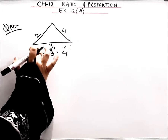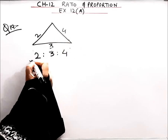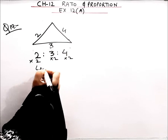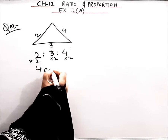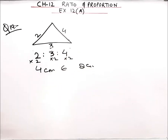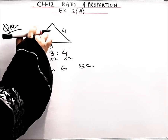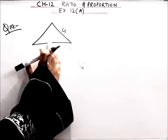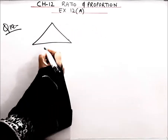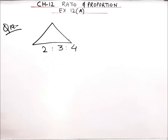If I multiply these numbers by 2, this side will be 4 cm, this side will be 6 cm, and this side will be 8 cm. So this ratio given is 2:3:4 — that is the ratio given, and the exact sizes are given accordingly.